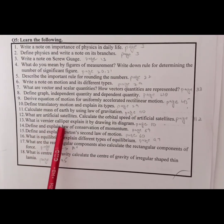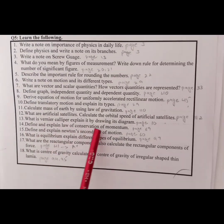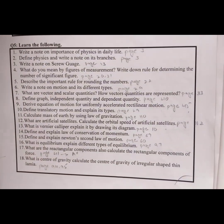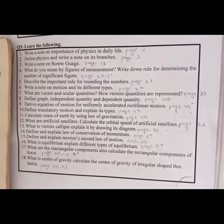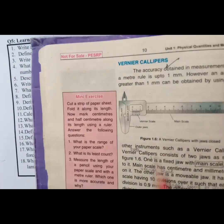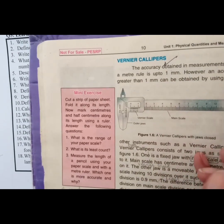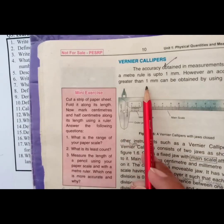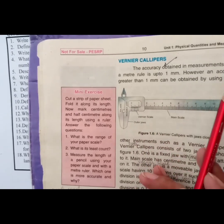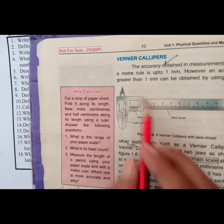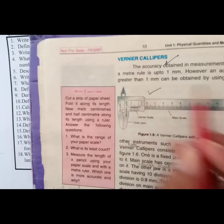What is a vernier caliper? Explain it by drawing its diagram. Open up page number 10. The accuracy obtained in measurements using a meter rule is up to 1 mm. However, an accuracy greater than 1 mm can be obtained by using some other instruments such as vernier caliper. Here we have the diagram of vernier caliper.